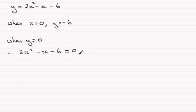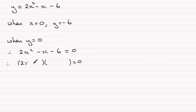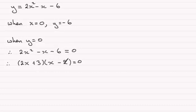Solving this quadratic equation can be done either by the formula or in this case by factorising. Factorising is the quickest here. We're going to have a 2x and an x, which gives us 2x squared. For two numbers that multiply to give minus 6, that's going to be plus 3 and minus 2. 3 times minus 2 is minus 6, and 2x times minus 2 is minus 4x, plus 3x gives us minus x.